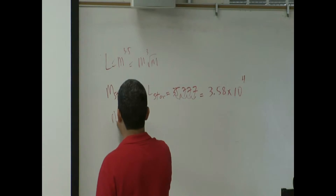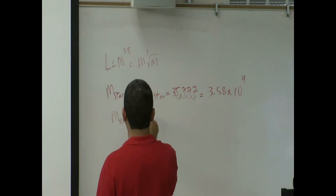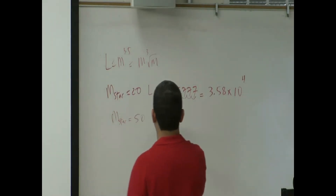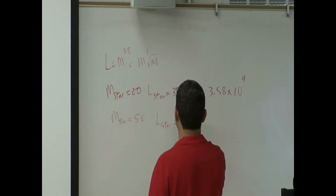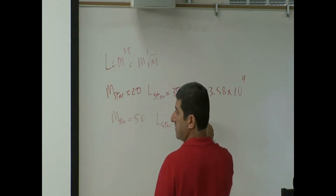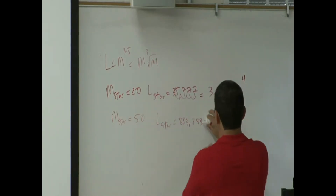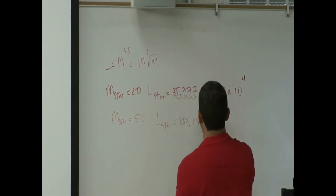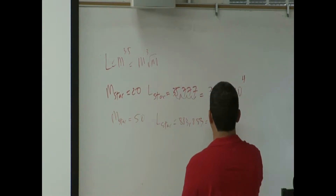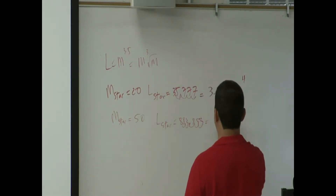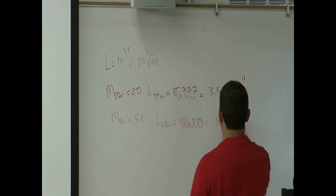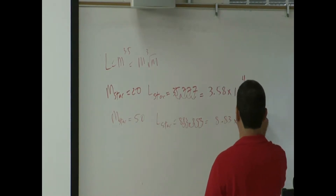If the mass of the star is 50, then the luminosity of the star is 883,883. In scientific notation, that's 8.83 times 10 to the 5th.